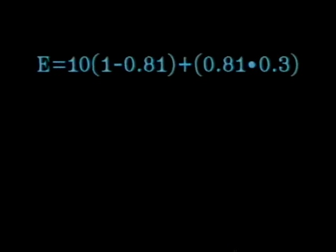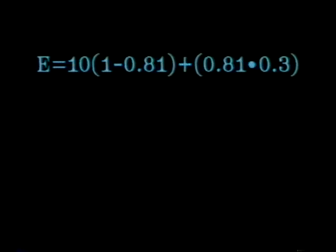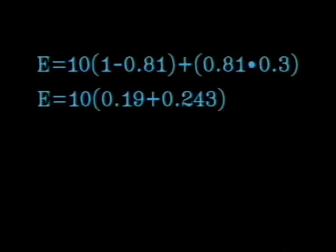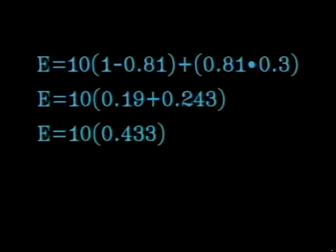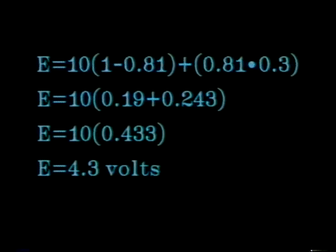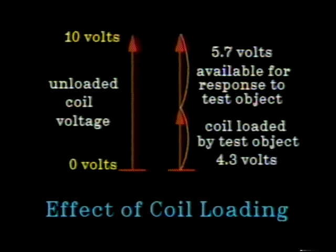When the non-magnetic test object is inserted into the test coil, the coil's voltage will decrease. For example, E equals 10 times the sum of (1 minus 0.81) plus (0.81 times 0.3), which equals 10 times (0.19 plus 0.243), which in turn equals 10 times 0.433, or 4.3 volts. This allows 10 minus 4.3, or 5.7 volts, available to respond to test object changes caused by discontinuities or decreases in the effective conductivity of the test object.